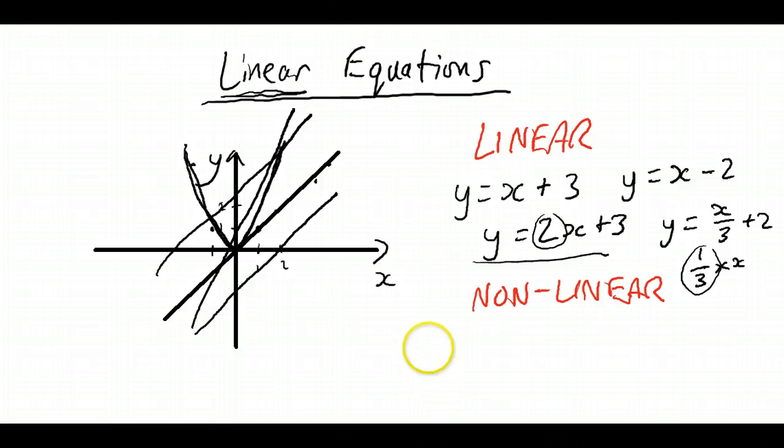But some non-linear relationships, we already looked at one, which was y equals x squared. Another one would be y equals the square root of x, would not be a linear relationship. y equals 1 over x, that's not going to work. The difference here is that the x is on top here, and here it's on the bottom.